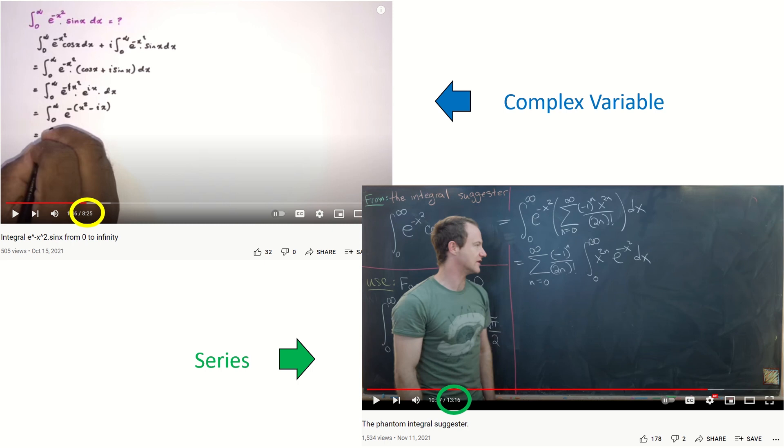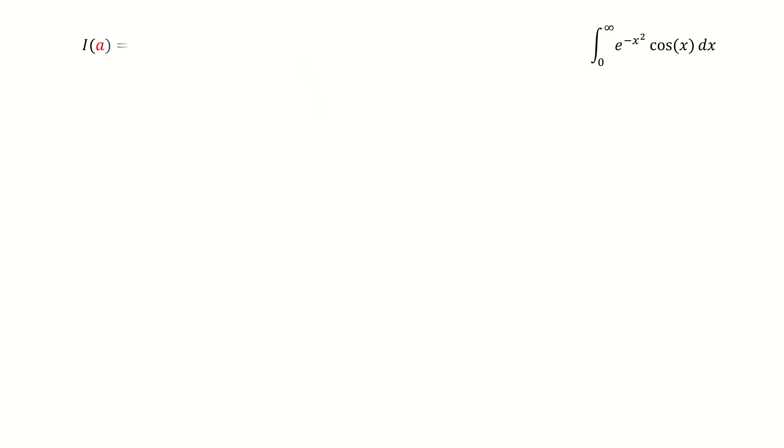So let's get started. So first, we introduce a function I here, and this function only depends on a, and for simplicity, we write it as a capital I. So for the original problem, it equals to the value of I(1).